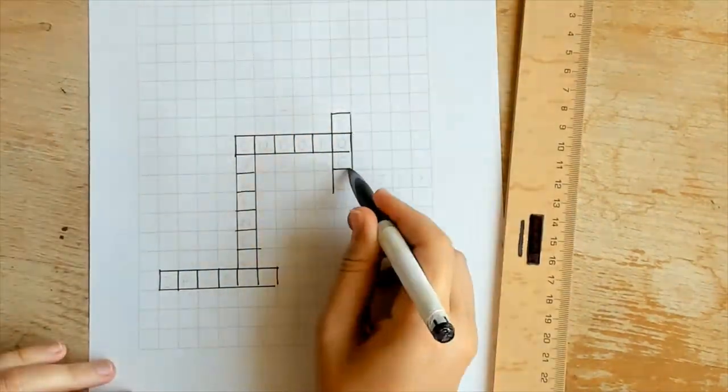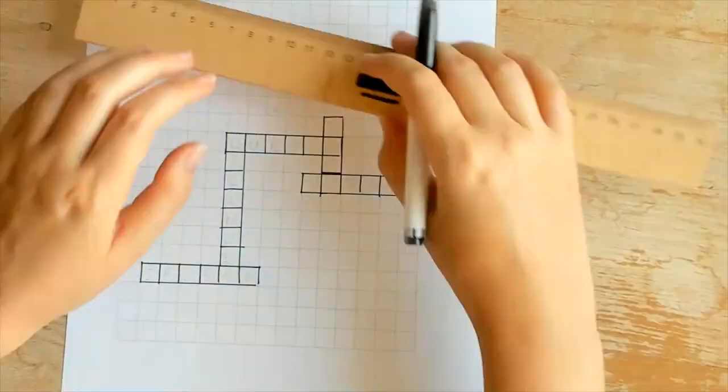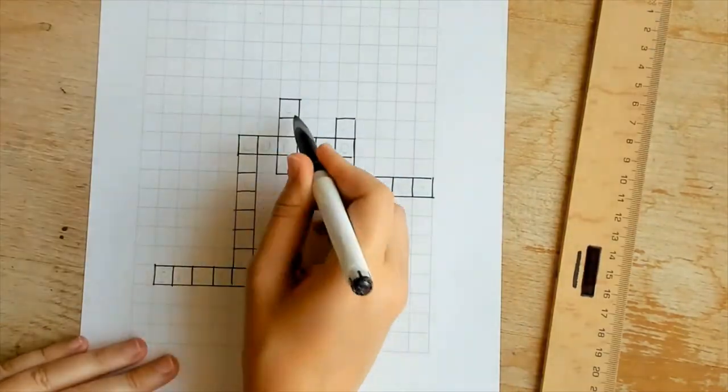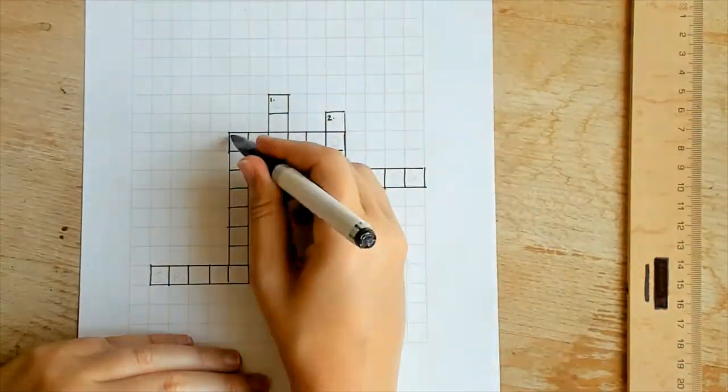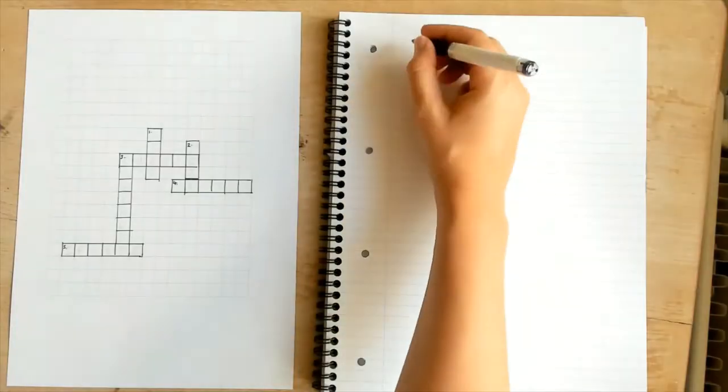They start numbering from the top of the page, moving down row by row.